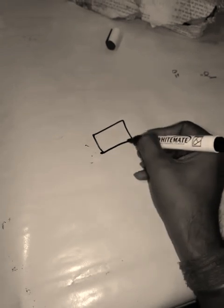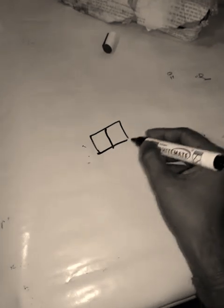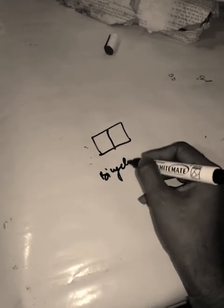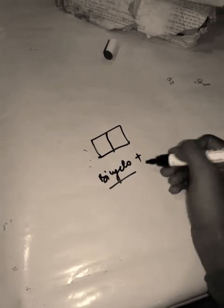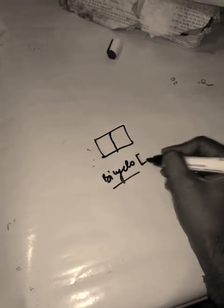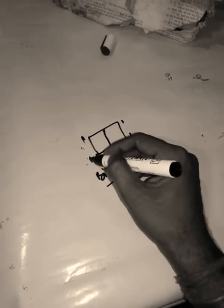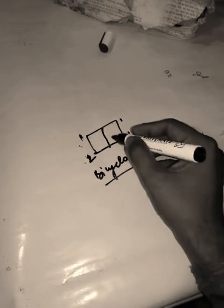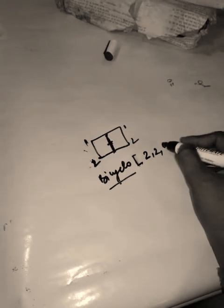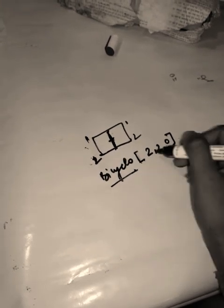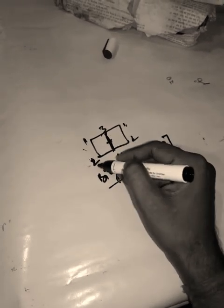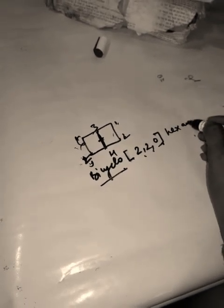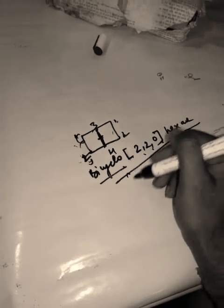Another bicyclic example: write 'bicyclo', then count bridge carbons — two on one side, two on the other, and zero carbons on the third bridge (the direct bond). So the bracket is [2.2.0]. Total carbons are six, giving 'hex', single bond gives '-ane'. Name: bicyclo[2.2.0]hexane.